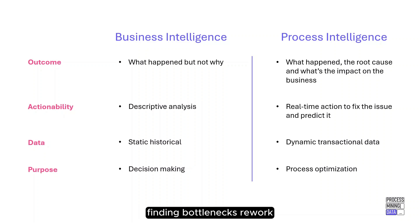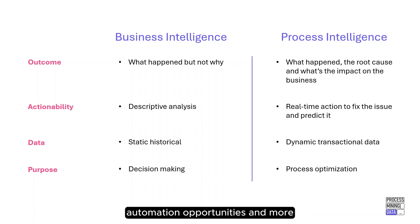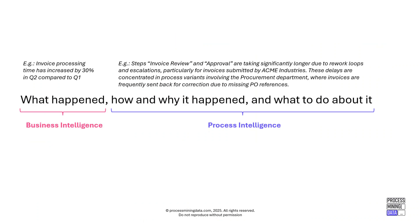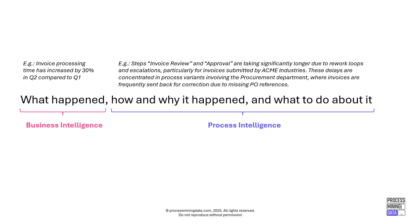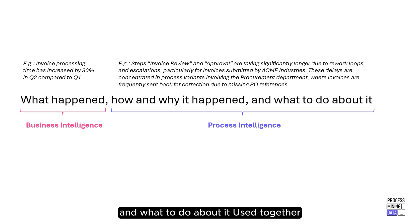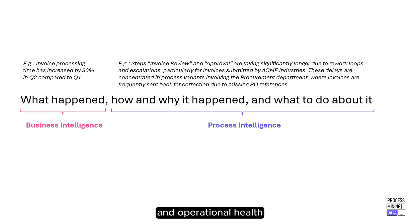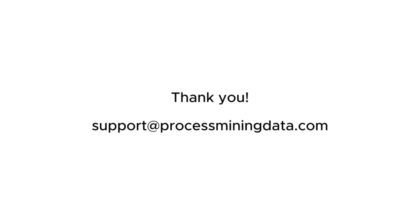Process mining finds bottlenecks, rework, SLA violations, conformance issues, automation opportunities, and more. To recap: business intelligence tells you what happened; process mining tells you how and why it happened, and what to do about it. Used together, they create a full 360-degree view of business performance and operational health. Thanks for watching — stay tuned for the next session, and if you have any questions, feel free to reach out.